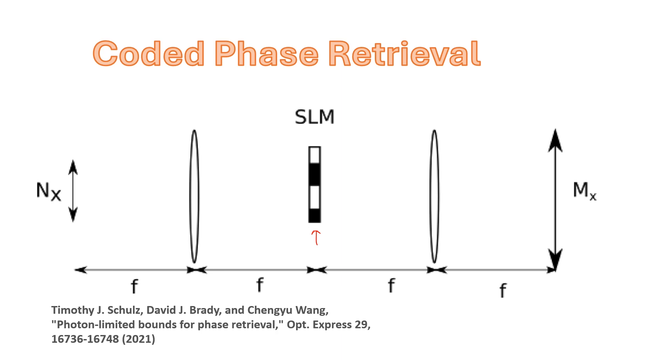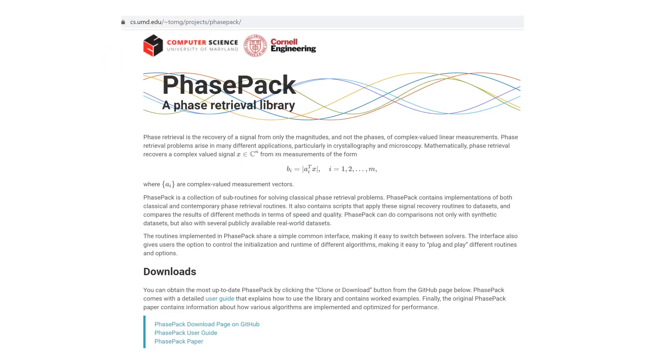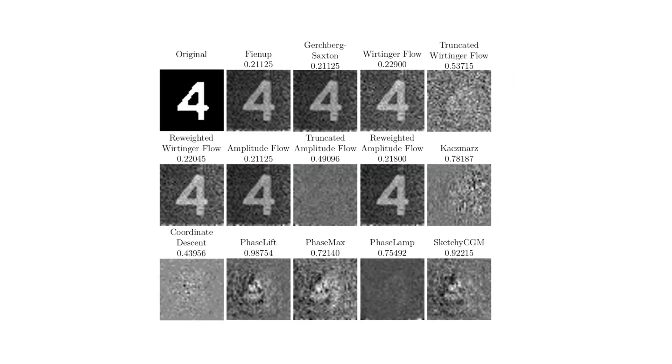You can explore this kind of approach using these algorithms that are very conveniently produced by the University of Maryland. The PhasePack is a MATLAB family of algorithms for implementing phase retrieval. If you go to their site, they implement the hybrid input-output algorithm labeled here as the Fienup algorithm, Gerchberg-Saxton, and then over the years many different phase retrieval algorithms have been proposed. Here's comparisons of them where in this case you're measuring just the Fourier transform of the field and supplying a support constraint.